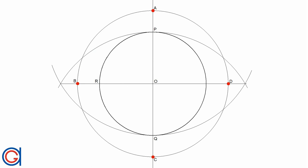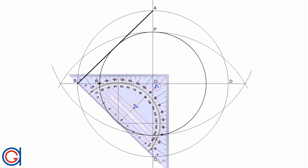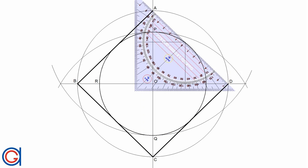Where this circle cuts the vertical and horizontal diameters at four points, we name them A, B, C, and D — these are the four vertices of the square we want to draw. With a thicker line we join A to B, B to C, C to D, and finally D to A. And here we have a square circumscribed around a given circle.